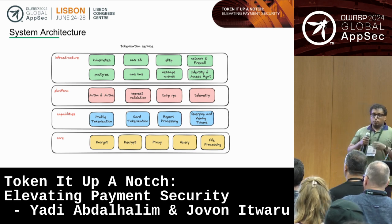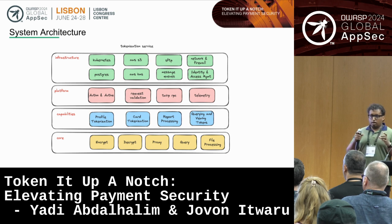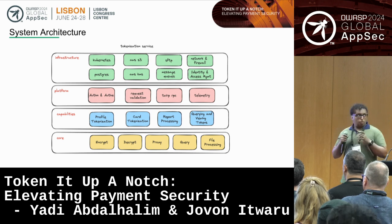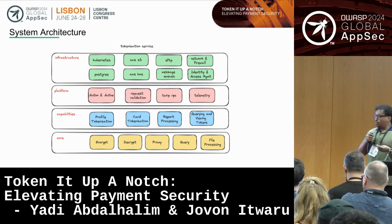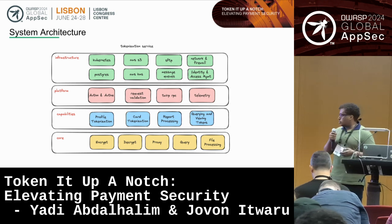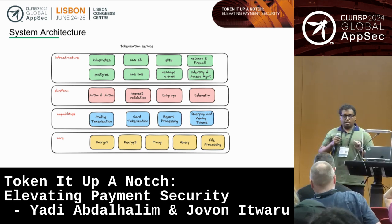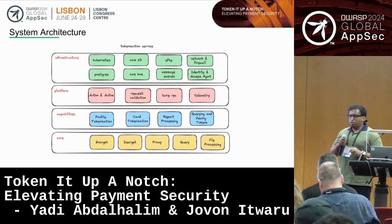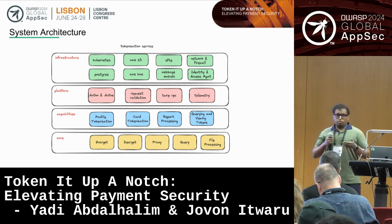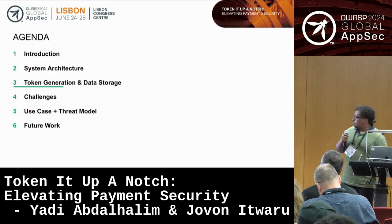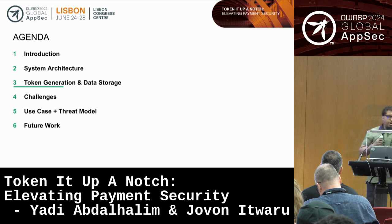If we logically group the components, this is what the system looks like. Now that we have grouped them, we can think about the threat model — where vulnerabilities could arise — and that's how we've been logically grouping and identifying weak points in our system. At the core, everything comes down to: we should be able to encrypt or create a token, decrypt, proxy a token to some destination securely, query — taking some value and associating it with tokens in our system — and file process or report on these. I'll let Jovan talk about token generation, and then I'll come back for data storage.